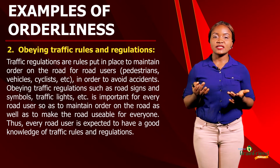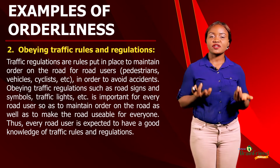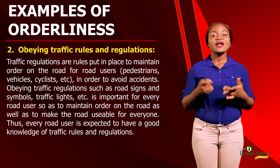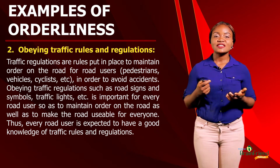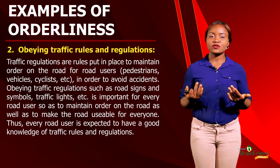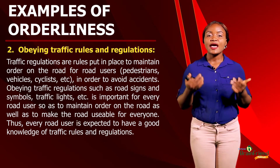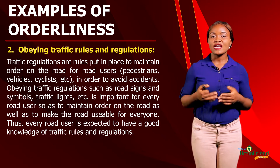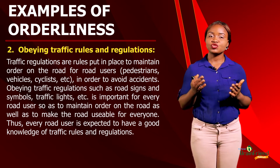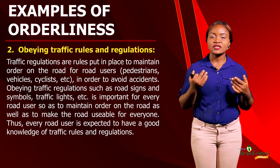Another example of orderliness is obeying traffic rules and regulations. Traffic regulations are created to help maintain order on the road for road users, including cyclists, vehicle users, pedestrians, and so on. Obeying traffic regulations such as road signs and traffic lights helps to reduce accidents on the road as well as maintain order. Therefore, every road user is expected to obey all traffic regulations and rules.